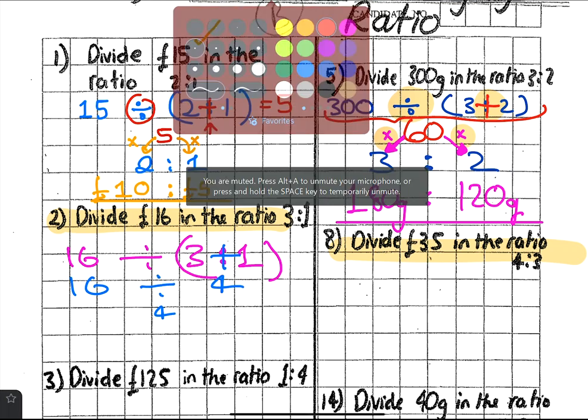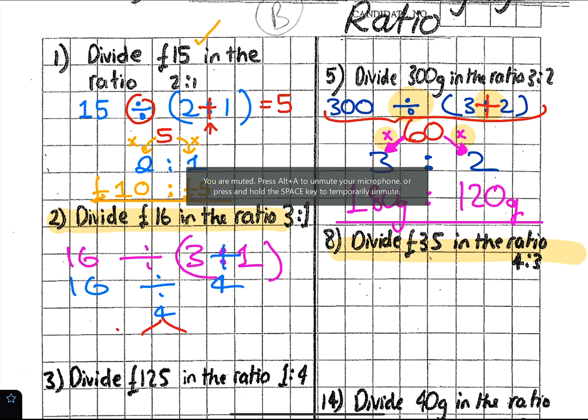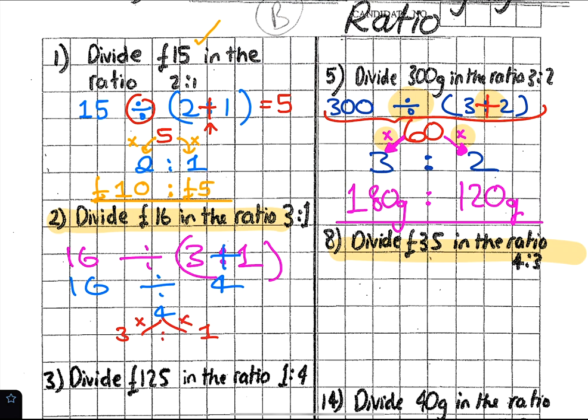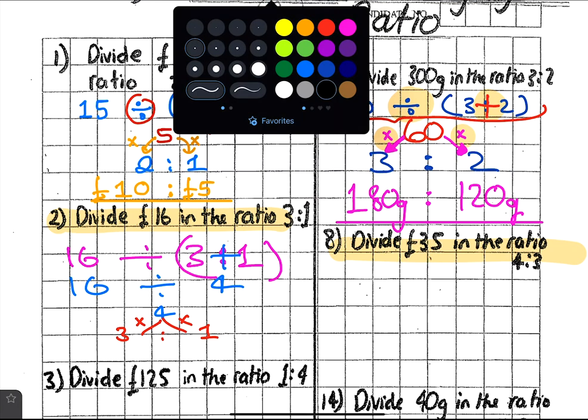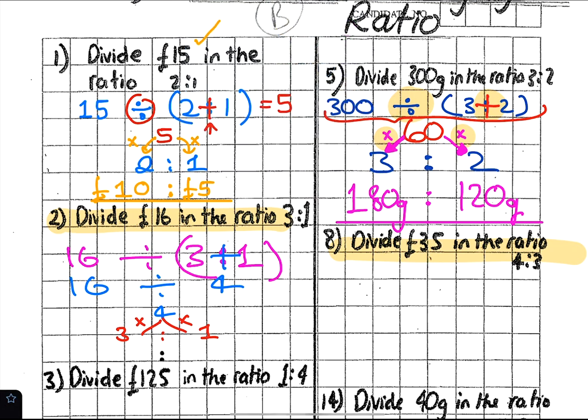So once you finish dividing, then you times it by the ratio. What's the final answer for that one, Hibba? The answer for number 14 is 12.